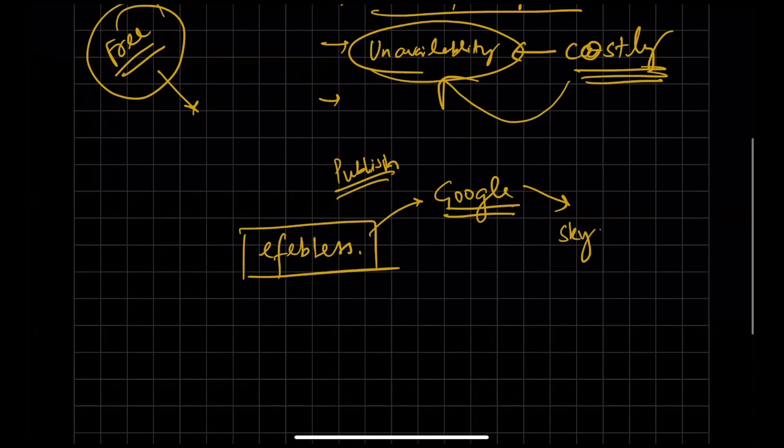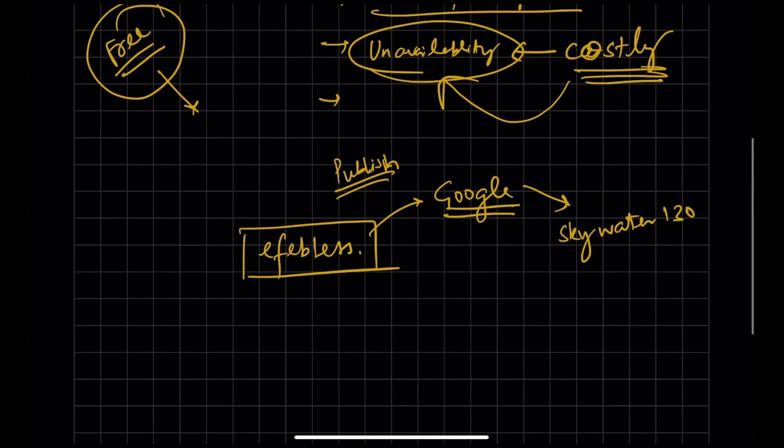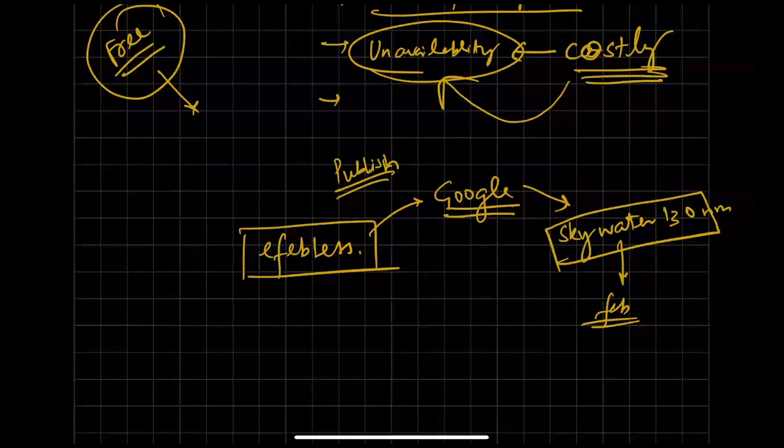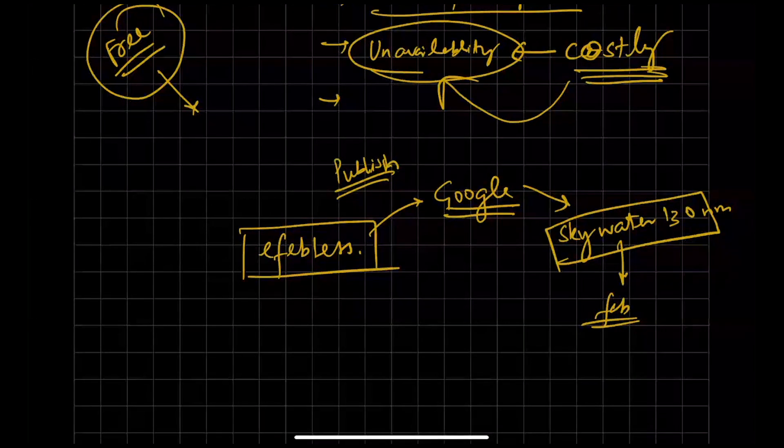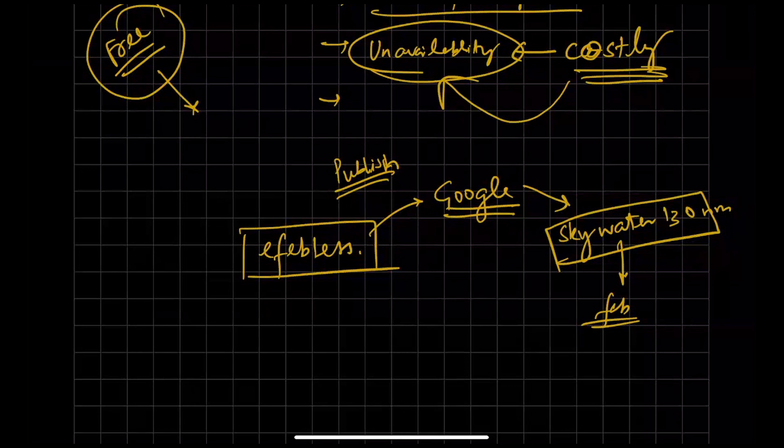So, that is Skywater, 130 nanometer PDK. It's a 130 nanometer node. So, Skywater is one fab, one foundry. Google collaborated with Skywater and now they have made this PDK available to the public.